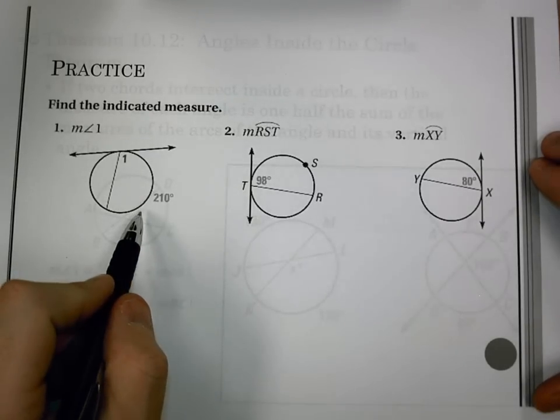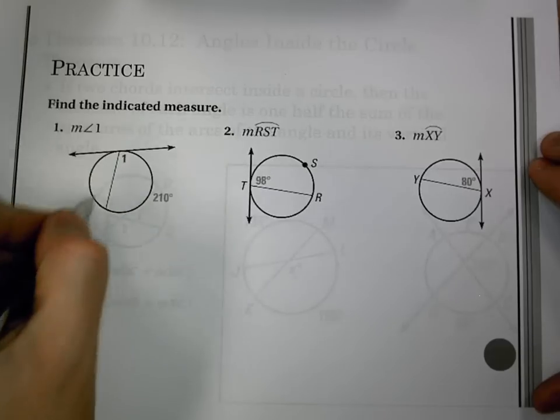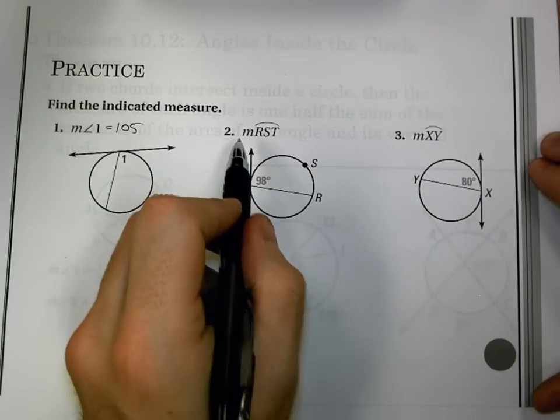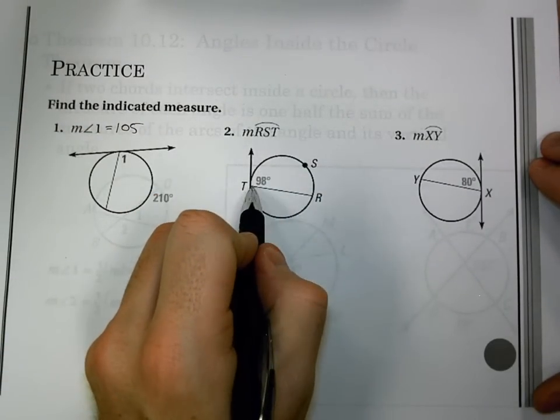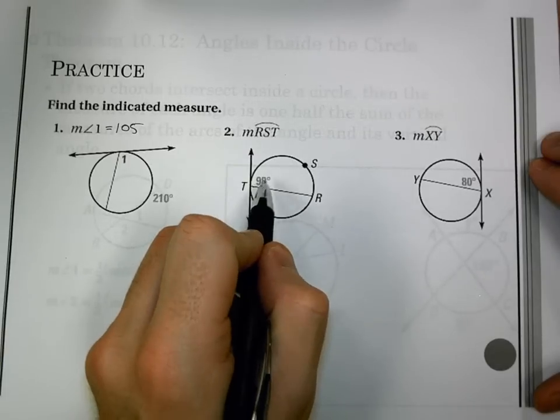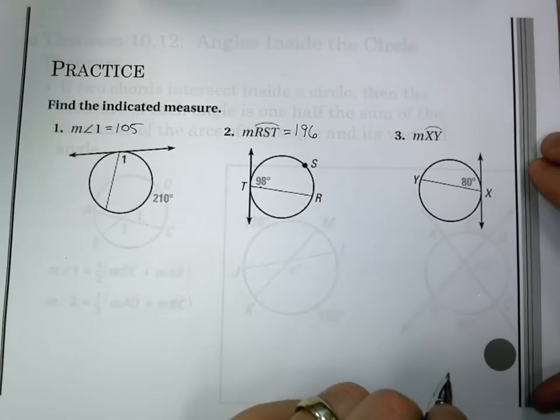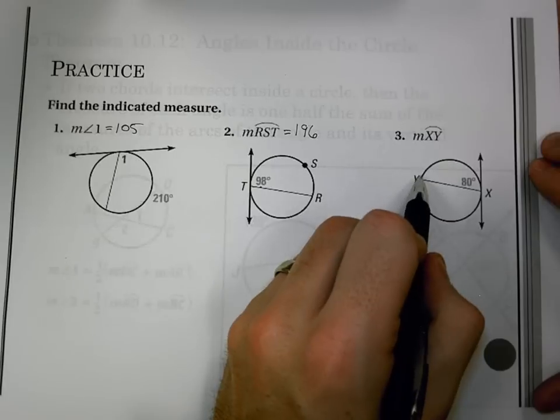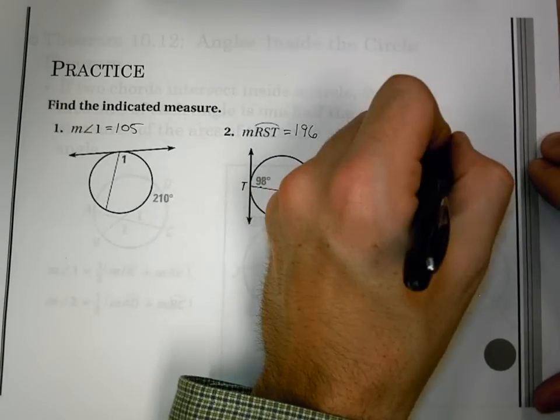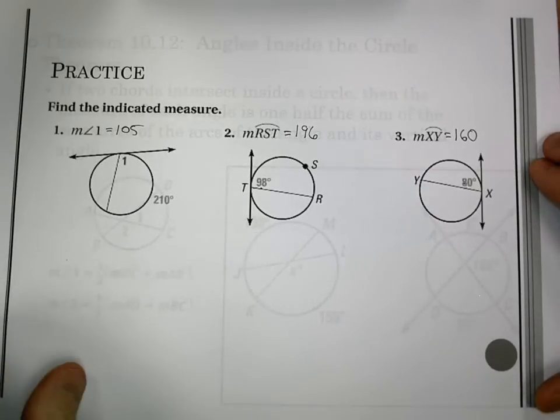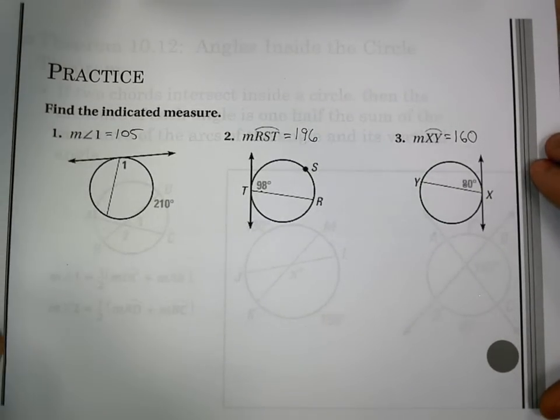I need angle 1. If it's 210, I take half of it, and I get that measure of angle 1 is 105. For number 2, arc RST, I have 98 at its angle. I have to double that, and I get 196 for its arc. And then last, arc XY, the angle is 80, so the arc is 160.